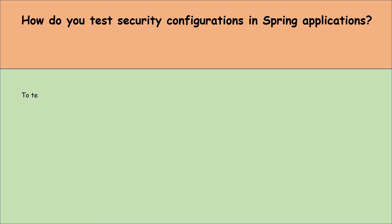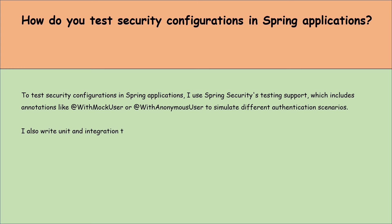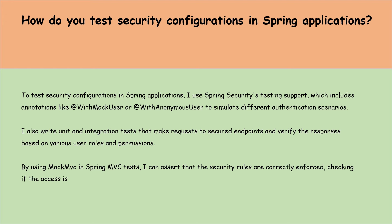How do you test security configuration in a Spring application? To test security configuration, I use Spring Security's testing support, which includes annotations like @WithMockUser or @WithAnonymousUser to simulate different authentication scenarios. I also write unit and integration tests that make requests to secure endpoints and verify the response based on various user roles and permissions. By using MockMvc in Spring MVC tests, I can assert that the security rules are correctly enforced, checking if access is granted or denied as expected, ensuring the security configuration is working properly.